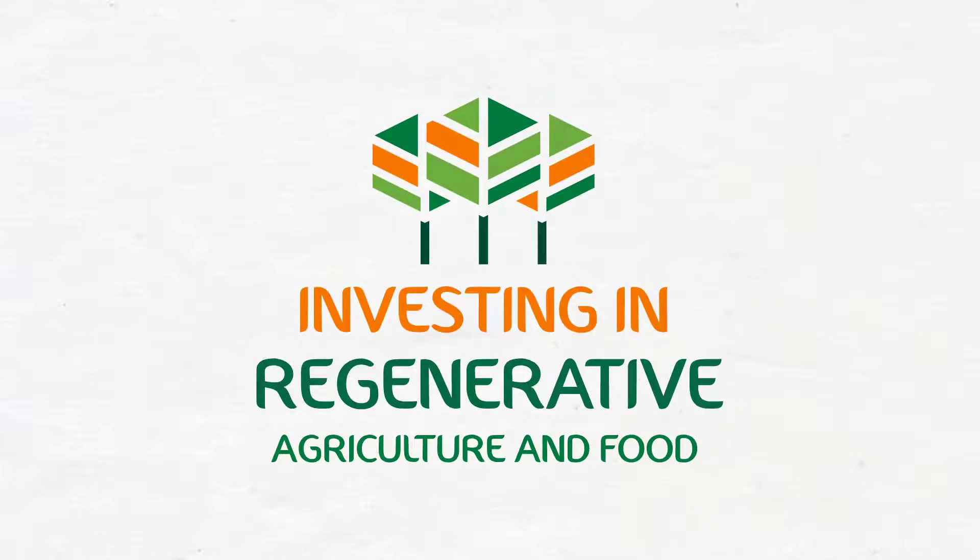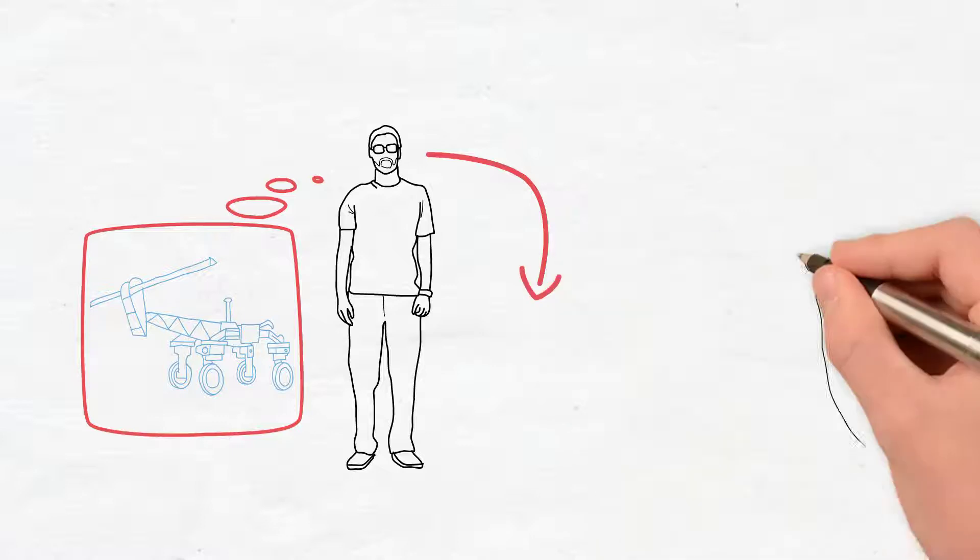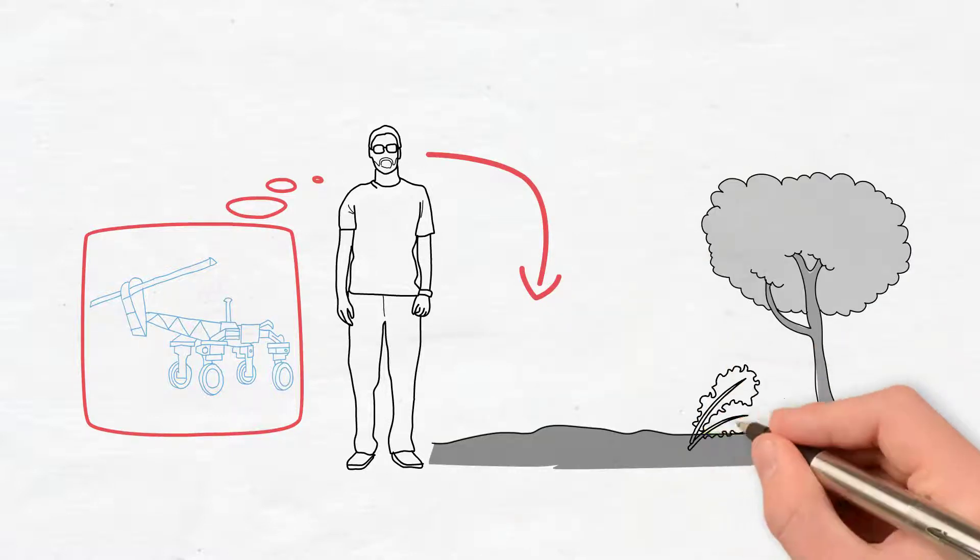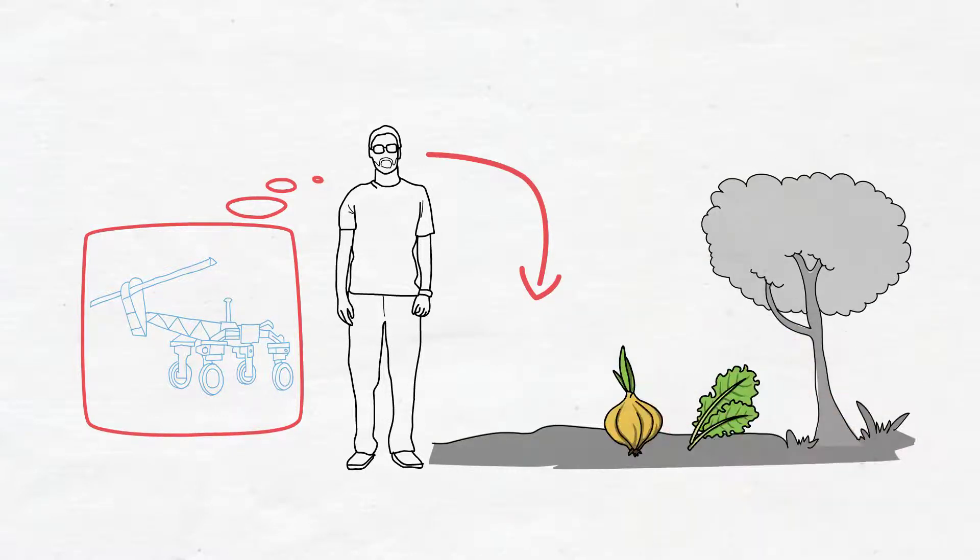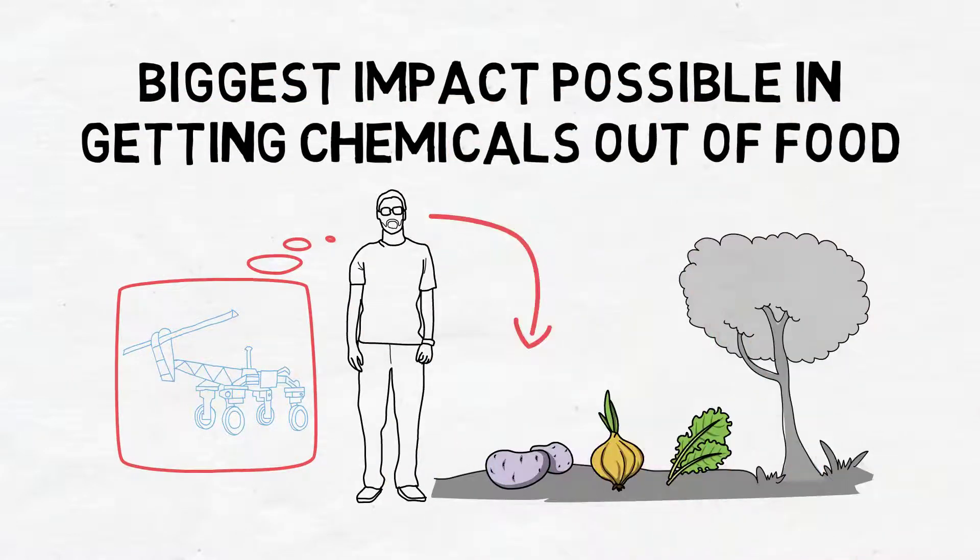How did we start building robots? About five years ago, I decided I wanted to start doing what I've learned about organic farming, using vegetables, and I wanted to do it out on broadacre fields. I wanted to have the biggest impact possible in getting chemicals out of food.